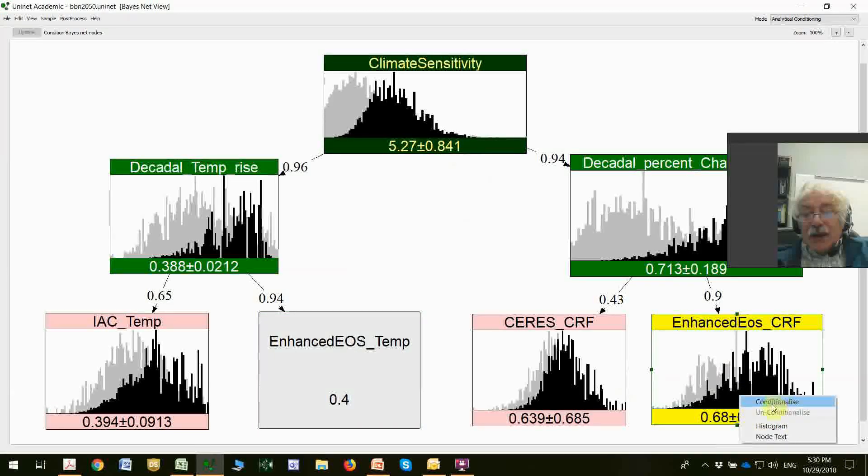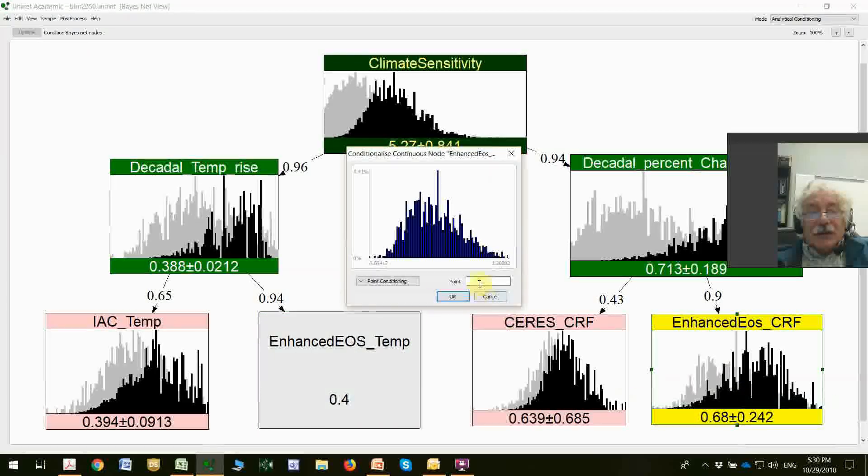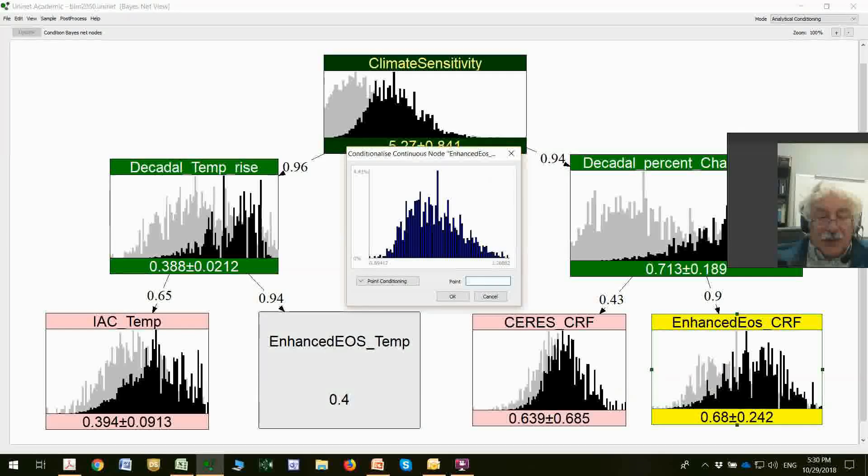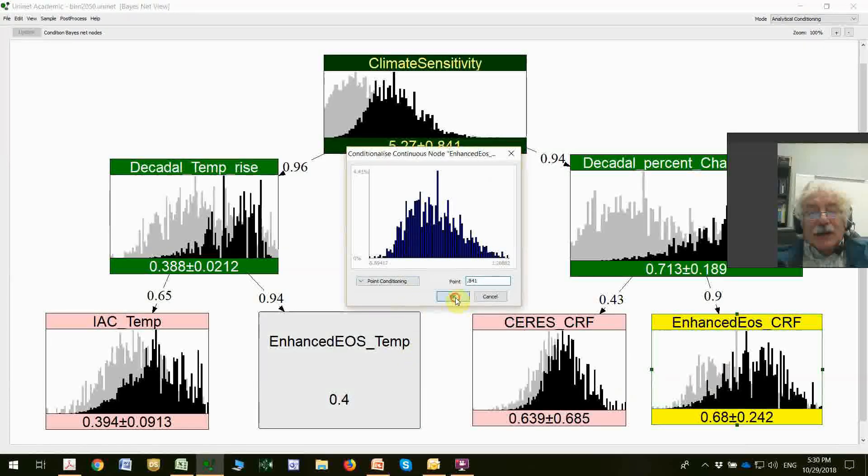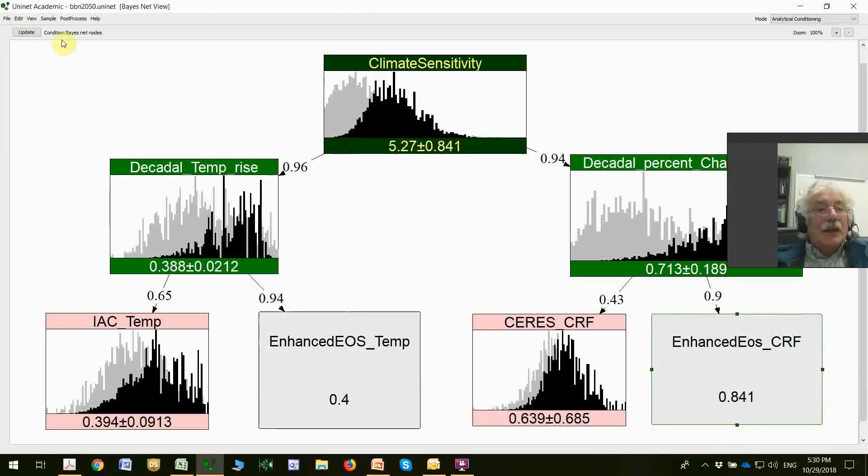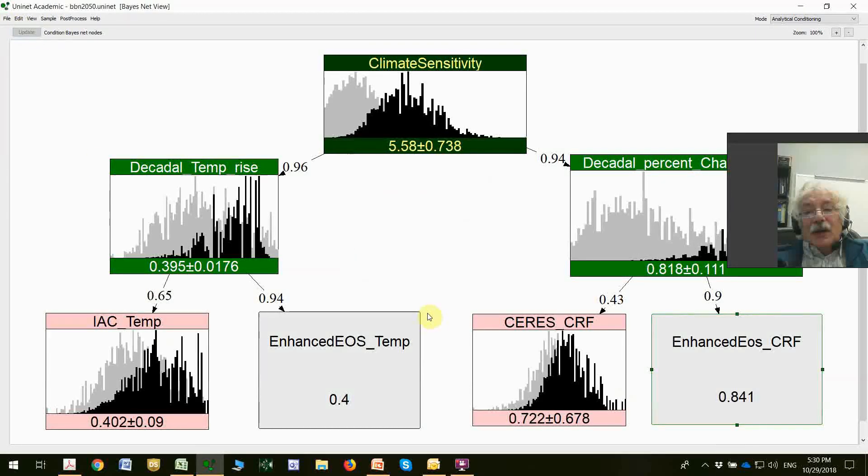We're going to conditionalize now here on 0.841. We combine and we propagate both pieces of information through this network. And what do we find? Yes, the standard deviation went down to 0.738, but the mean value went up.